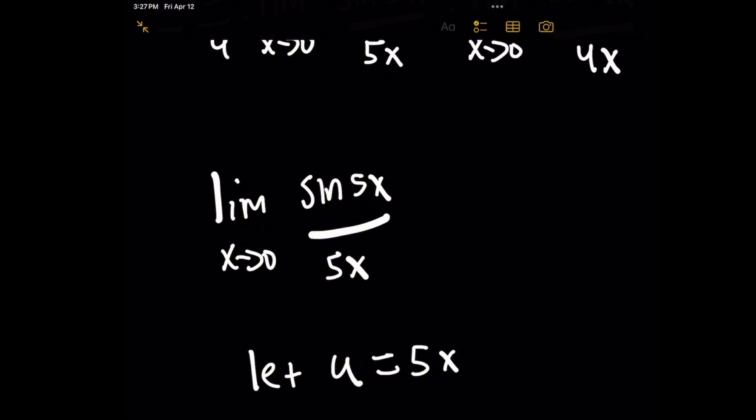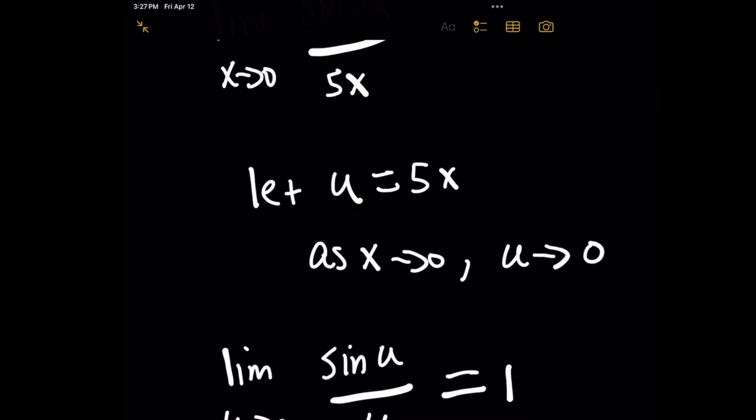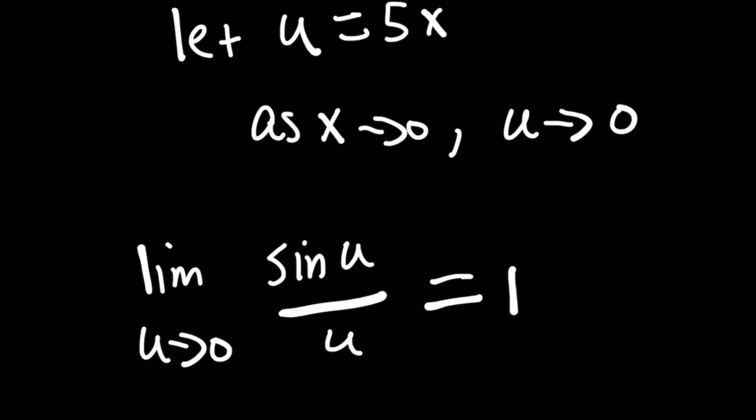And so the limit as x approaches 0 of sine of 5x over 5x can be rewritten in a way where we simply plug in what u is. And we get this new limit as u approaches 0, because now we have a new variable, of sine of u over u. And guess what? That's where we can use the squeeze theorem that we talked about above. Because whether it's x or u, we know that that important property can now be used.